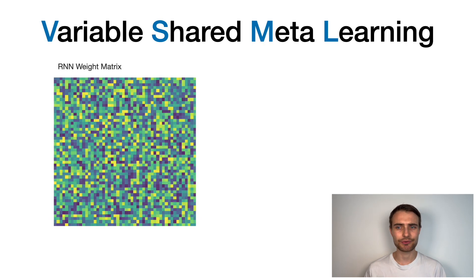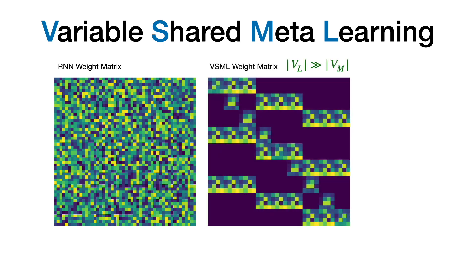On the left, we have a standard recurrent neural network weight matrix. Here, randomly initialized. And this matrix could be used in a meta RNN. In variable shared meta-learning, we have a sparse matrix that uses the same pattern repeatedly in different locations.